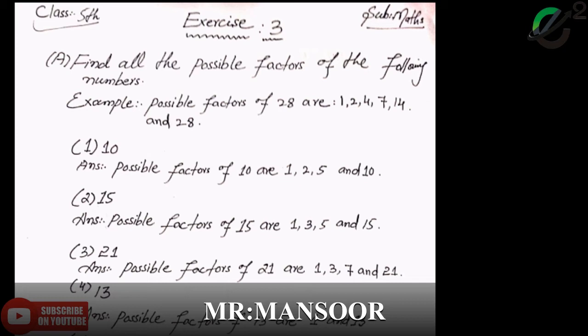Next we need to find the possible factors of 15. Answer: possible factors of 15 are 1, 3, 5 and 15.